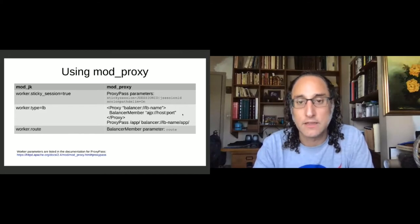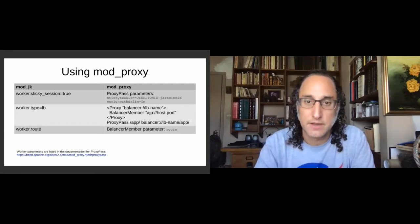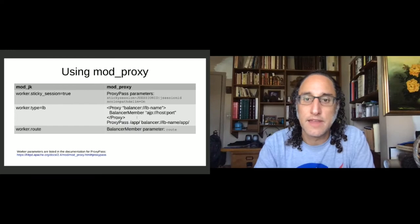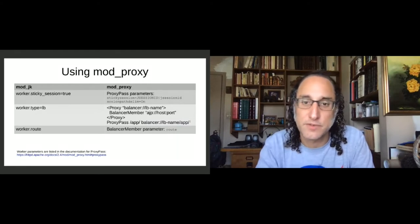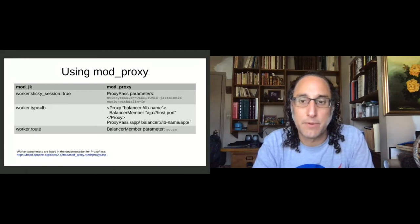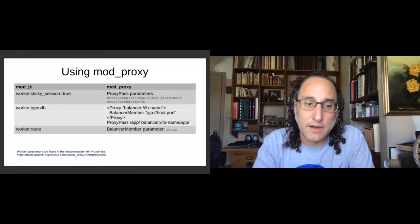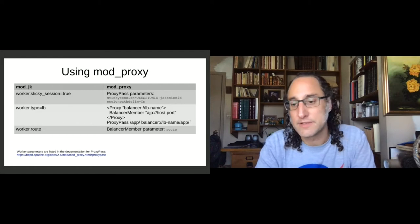Once you've defined the cluster, you need to use a ProxyPass directive that mounts this URL and sets up the proxy referencing the balancer you've set up. If you want to set the route for a particular worker, set the BalancerMember parameter and configure a particular route there. There's extensive documentation on the worker parameters — the URL is at the bottom of the slide.